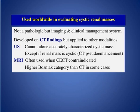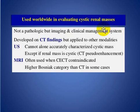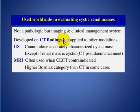The Bosnian classification is used worldwide in evaluating cystic renal disease. It is not a pathological but an imaging and clinical management system. It was developed on CT scan but can also be used on ultrasound and MRI.